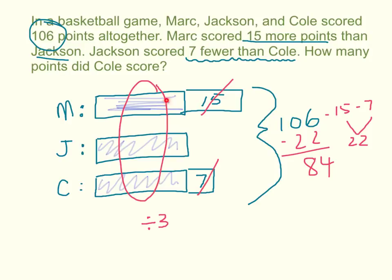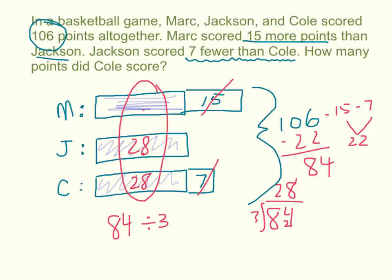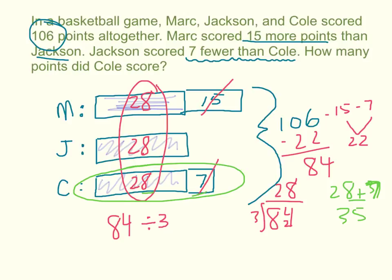That tells me that these 3 equal blocks together are 84. If I divide 84 by 3, I can find what each block is — and that gives me 28. Because all 3 blocks are the same size, they're all 28. Now I can answer the question: how many points did Cole score? Cole's bar has a base of 28 plus the extra 7, so 28 plus 7 equals 35. Cole scored 35 points.